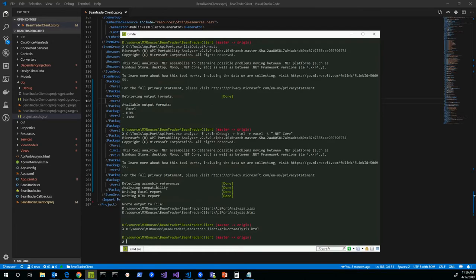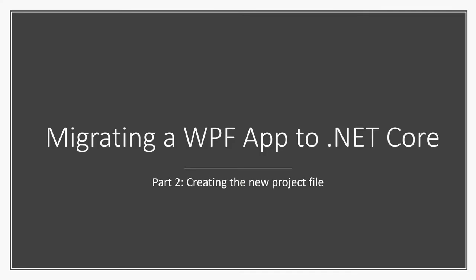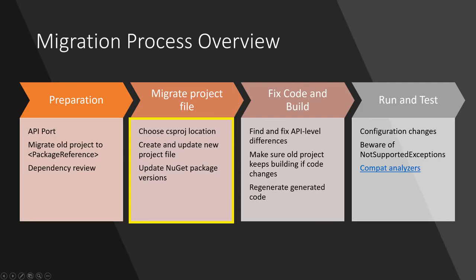Welcome back to migrating a .NET Framework WPF app to .NET Core 3. In this second video, we're going to actually start the migration now that we've done the preparatory work. We're going to create a new csproj and make sure we have updated versions of our NuGet packages, so we'll be all set for video three where we start making code changes. I see migration as a four-step process: prepare, get the project file set up and adjust NuGet packages, fix the code, then run and test to find any runtime differences.